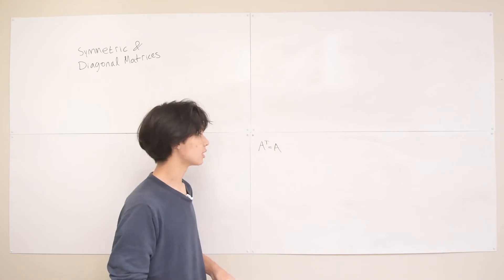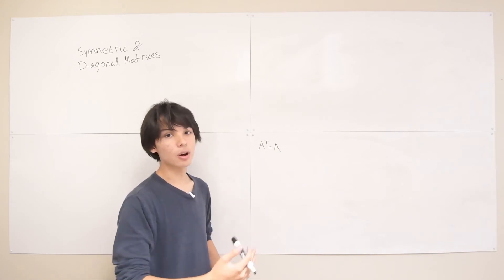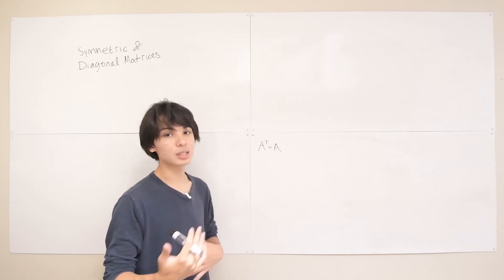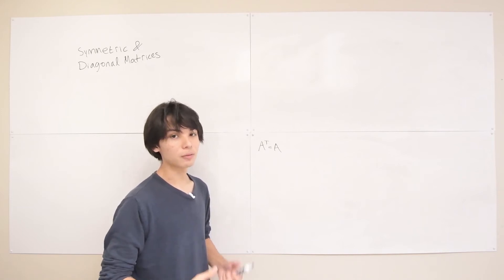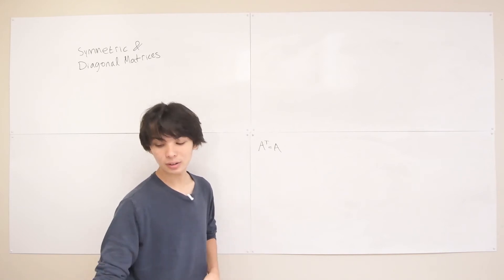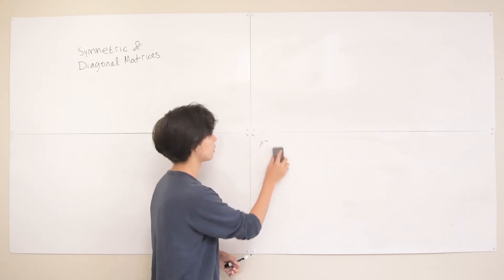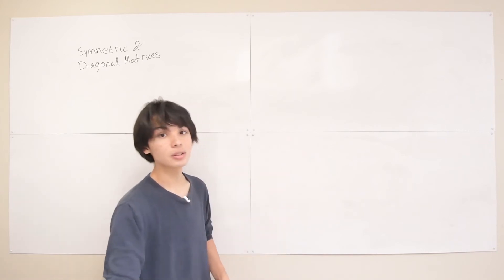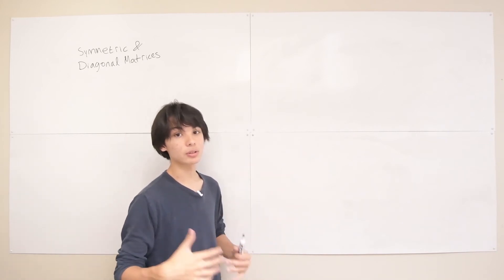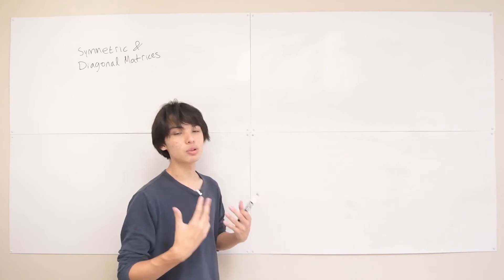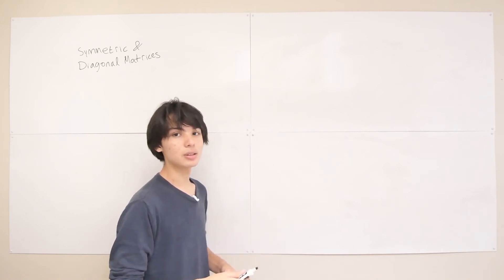But as we'll see later on, a matrix being symmetric often allows it to have a lot of other very helpful properties that make a lot of other things simpler. So they'll come up a lot. And often when we're making a matrix for some equation or some operation, we try to make them symmetric because that makes things a lot easier.